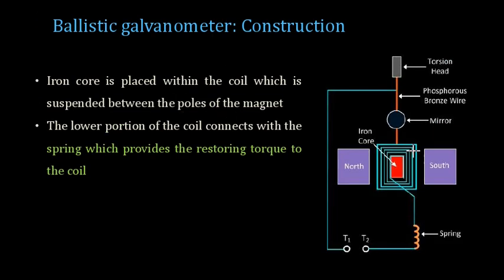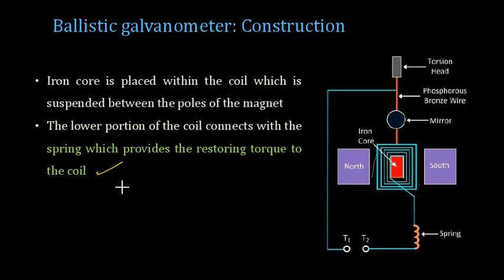The iron core or moving coil is placed within the poles of the magnet. A spring is also provided which supplies the restoring torque, bringing the system back to its normal position once the deflecting torque ceases. Damping is minimum, and the spring provides the restoring torque.